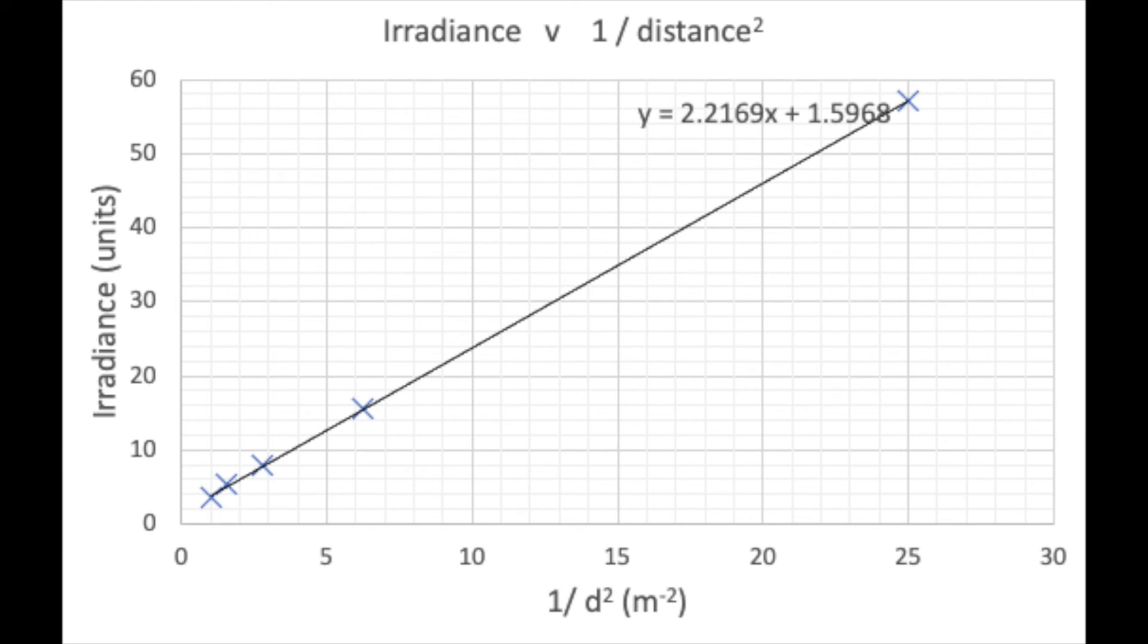This is possibly due to the background light that was still in the room. If we were to subtract 1.6 from all of our irradiance measurements, then our graph would be a straight line that goes through the origin. So we have then verified that for a point source, irradiance varies directly with 1 over the distance squared, or irradiance times the distance squared is equal to a constant. That's it, see you in a bit.